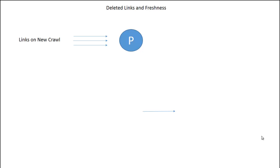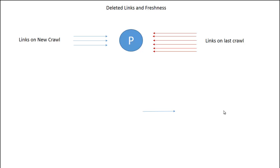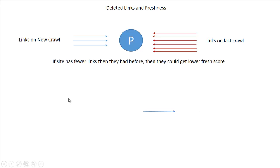Deleted links also play a role in freshness. If Google crawls your site and finds 3 links to your website, but previously when it crawled it found 8 links, that means you've lost links. If a site has fewer links than it had before, it could get a lower freshness score as a result.